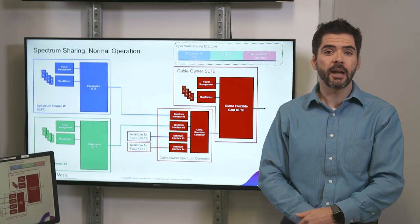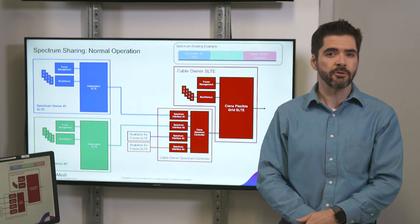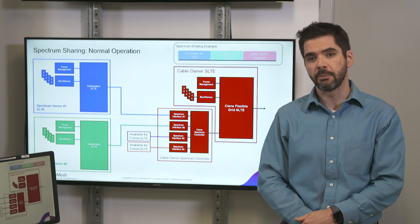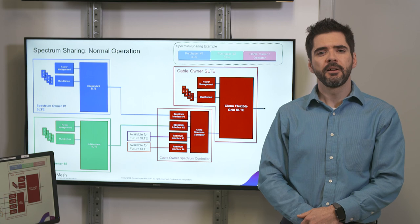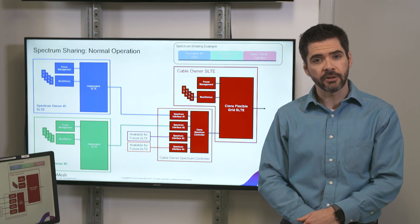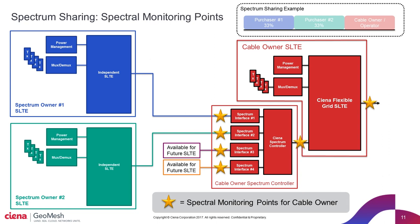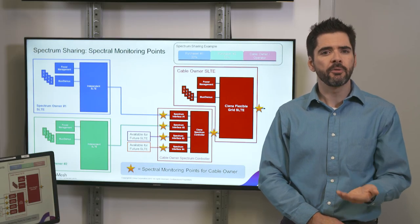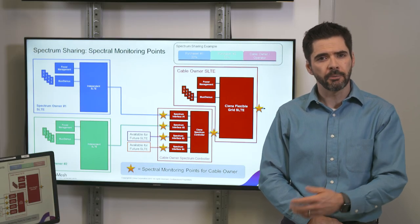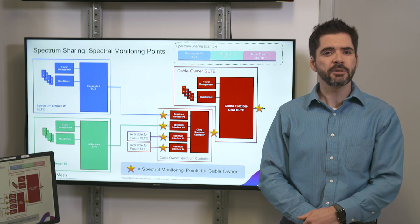Each customer or spectrum owner will then provide their own modems and their own SLTE and will connect these SLTEs to the spectrum controller. In this demonstration, we have built SLTEs for two independent spectrum owners in addition to the cable owner, but the architecture can support more. Finally, we need spectral monitoring for our solution, using our own in-skin OPM, or optical power monitor technology, at all key monitoring points in both the transmit and receive directions.